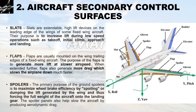Flaps are present on the trailing edge on both sides. Flaps are usually mounted on the wing trailing edge of fixed-wing aircraft; their purpose is to generate more lift at slower speeds. When extended further, flaps also generate more drag, which slows the airplane down faster. Spoilers: the primary purpose of ground spoilers is to maximize wheel brake efficiency by spoiling or dumping the lift generated by the wings, thus forcing the full weight of the aircraft onto the landing gear. Spoiler panels also help slow the aircraft by producing aerodynamic drag.